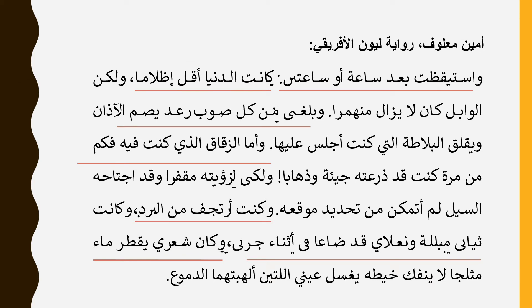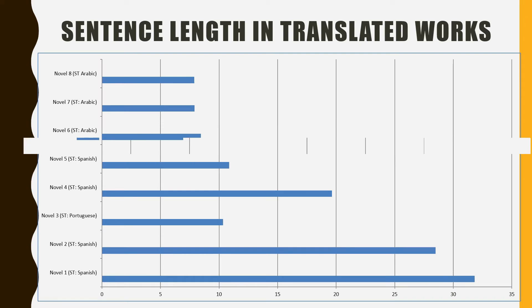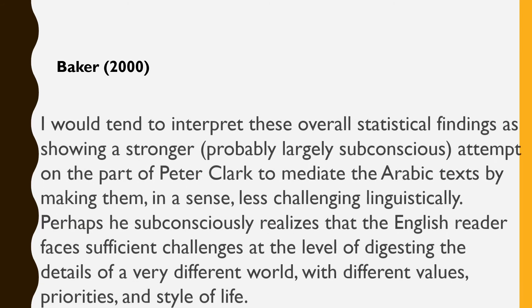Now look at this example quoted from one of Amin Ma'louf's novels. You can notice how short the sentences are. This could make the translator follow the same pattern. In a corpus-based study, Baker investigated sentence length in literary translation. She used the fiction subcorpus from TEC — the Translated English Corpus — designed by her to examine the style of the literary translator. She found that the average sentence length in Arabic translated novels is much lower than translated texts from other languages. In this figure, you can notice that novels translated from Arabic contain the shortest sentences.